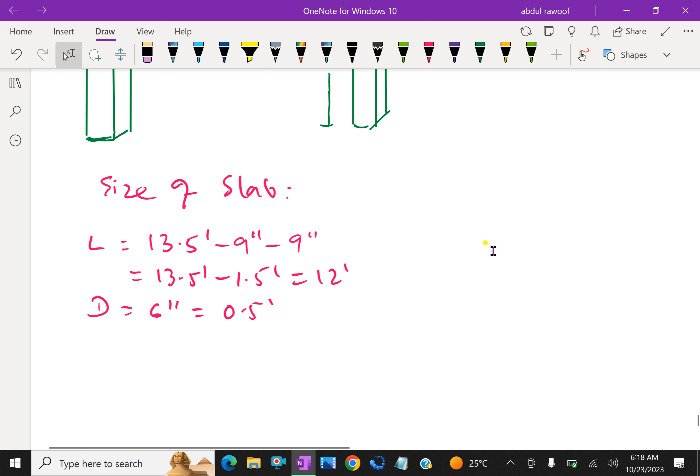Therefore, the beam length, L equals 13.5 foot minus 9 inch minus 9 inch, equal to 12 feet.